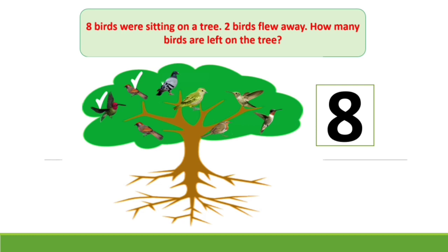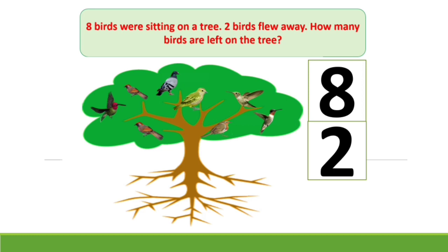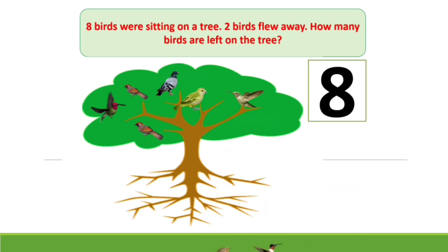Let's count these birds sitting on the tree. 1, 2, 3, 4, 5, 6, 7 and 8. How many birds are there kids? There are 8 birds and 2 birds flew away.